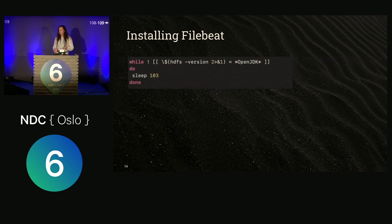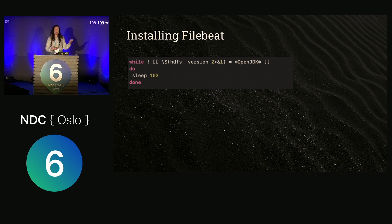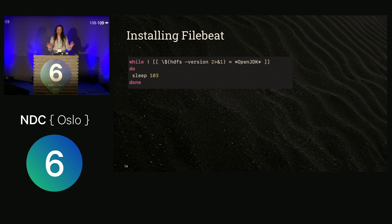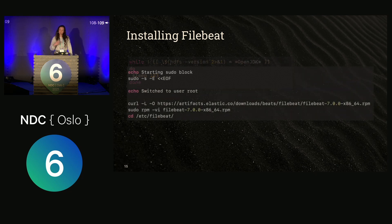Now that we have all our configuration variables, we're going to wait for HDFS to be installed on the server, because we're going to consume files that will be in HDFS. If FileBeat is up and running before HDFS, it's just going to crash. We also need JDK to be installed on our servers. Once that's done, we download our RPM file and we're ready to configure FileBeat.